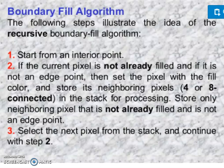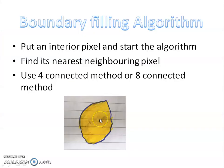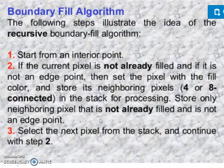For the boundary fill algorithm, the steps are as follows. Start from an interior point XY. If the current pixel is not already filled and is not an edge point, set the pixel with the fill color and store its neighboring pixels — for 4 or 8 connected — in a stack for processing. Store only neighbor pixels that are not already filled and are not edge points. Select the next pixel from the stack and continue.